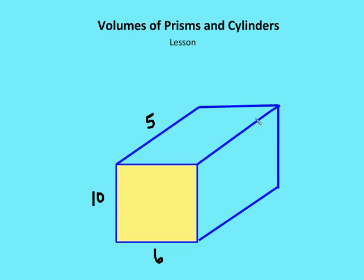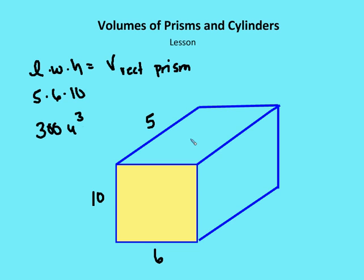Let's handle a couple quick problems. Now let's take a look at the volume of a rectangular prism. In this case, we have a length of 5, a height of 10, and a width of 6. So length times width times height equals the volume of the rectangular prism. My length is 5, my width is 6, and my height is 10, and this equals 300 units cubed.